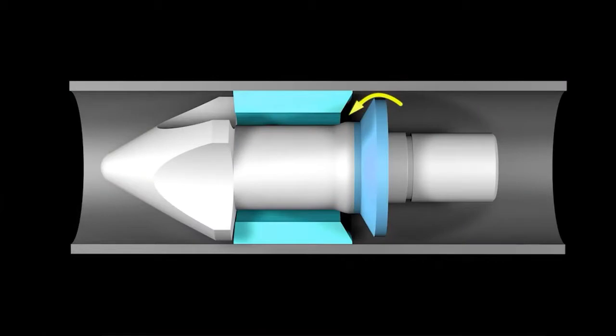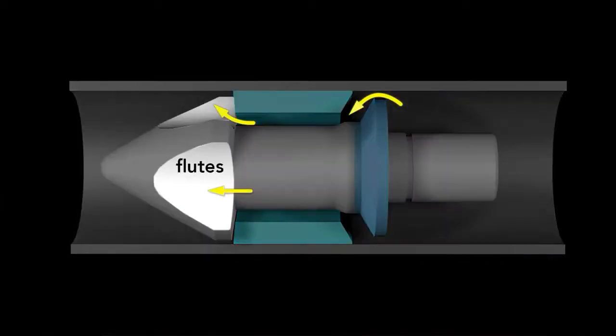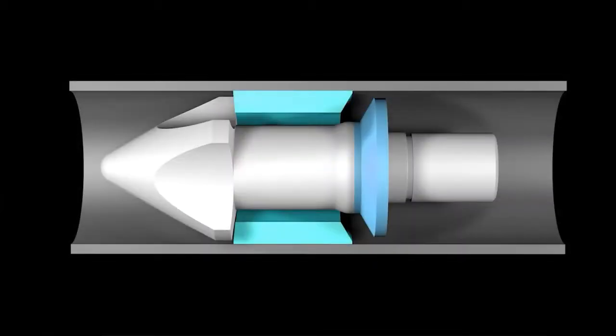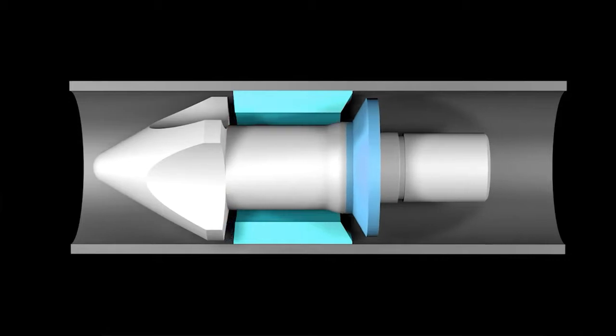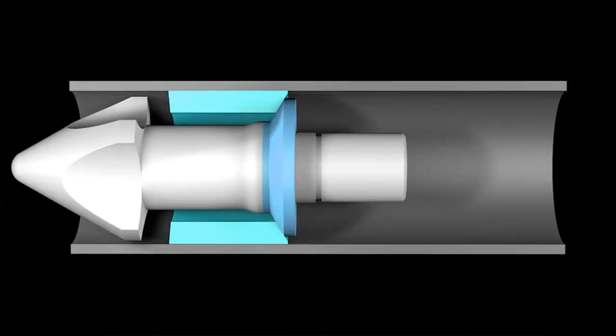The molten plastic flows past the front of the screw through indentations or flutes. When there's enough plastic to fill the mold at the front of the screw, it rams forward like a plunger, injecting the plastic into the mold.